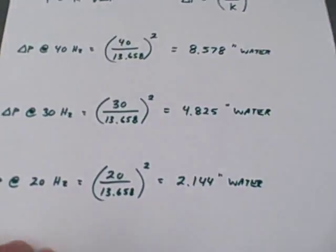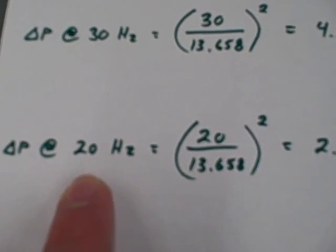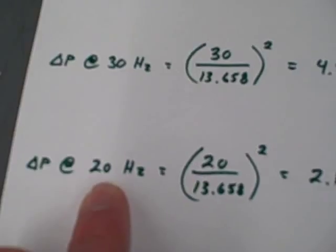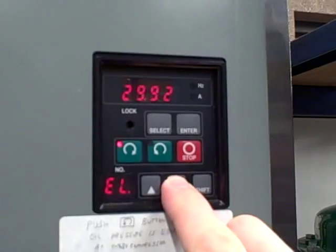Our next test is going to be to decrease the motor frequency down to 20 hertz. We predict a value of 2.144 inches of water given that new motor speed. We'll come over here and decrease this to 20 hertz.